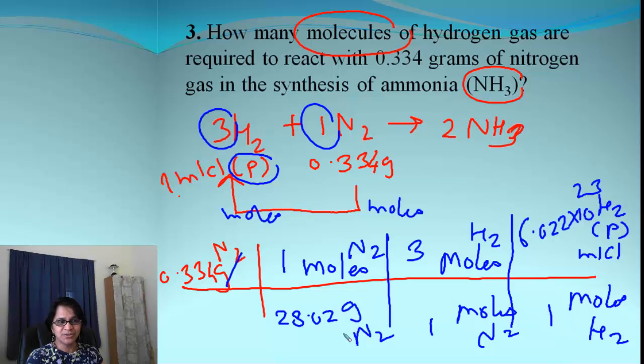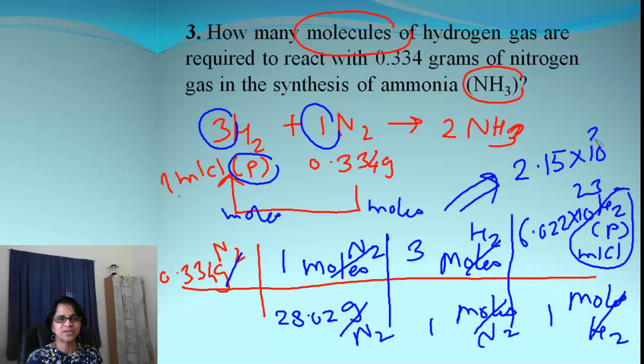And then, your job is to multiply all the numbers. And your final answer is going to be, the particles are molecules of hydrogen. Which, of course, I am going to give you right now. It is 2.15 times 10 to the 22nd. So many molecules or particles of hydrogen. So look at this.